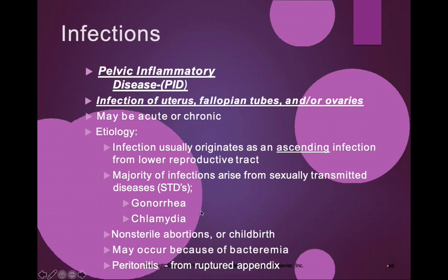Pelvic inflammatory disease, or PID, is an infection of the uterus, the fallopian tubes, and/or the ovaries — so now we're talking about the entire reproductive tract with the exception of the vaginal canal. This can be acute or chronic, and it is an ascending infection that usually originates from the lower reproductive tract.